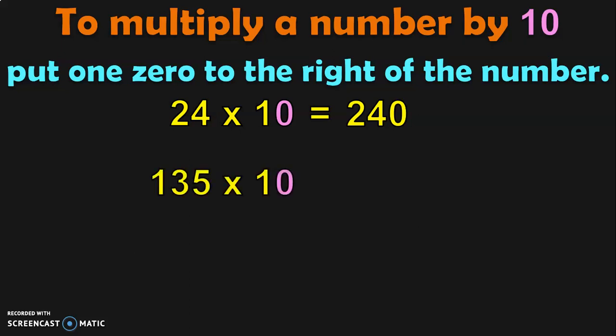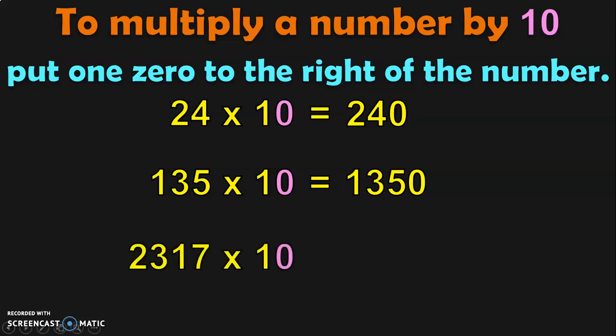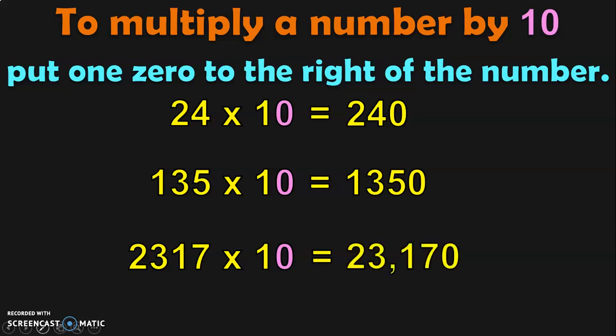Next, 135 into 10 will give you: write down the number 135 and append it with a zero. So, the answer will be 1,350. Next example: 2,317 into 10. Write down the number 2,317 and put one zero to the right of the number. This is a large number, so you will add the periods accordingly and read the number as 23,170.